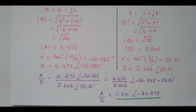So in this video, we discussed the complex J operator, what is meant by polar form and vector form, and we discussed four different examples: addition, subtraction, multiplication, and division. Thank you.